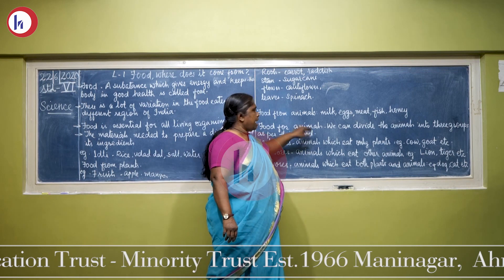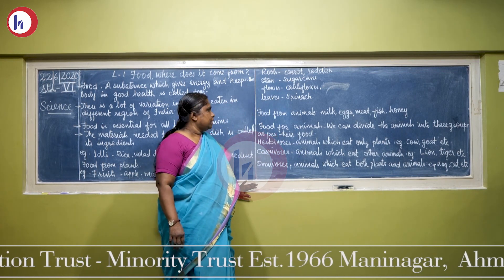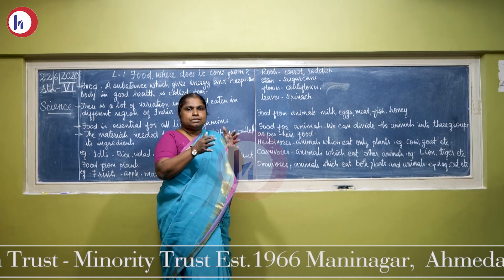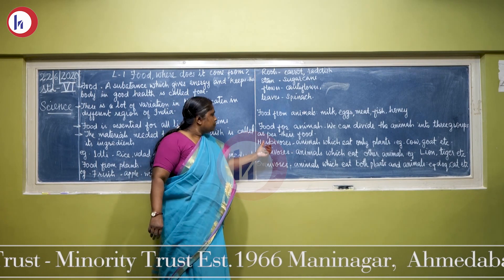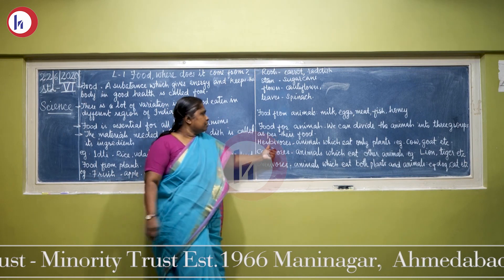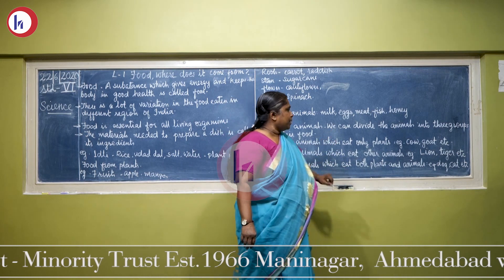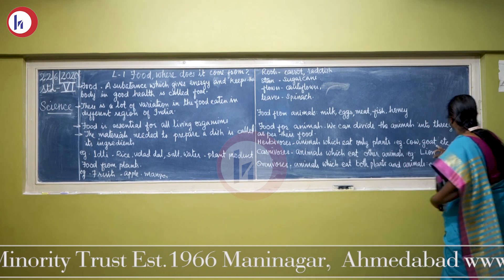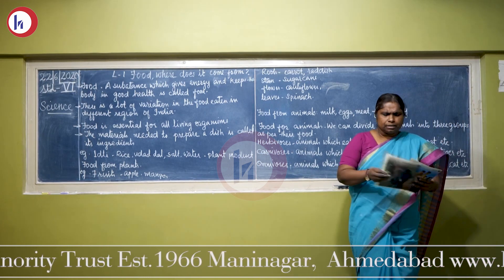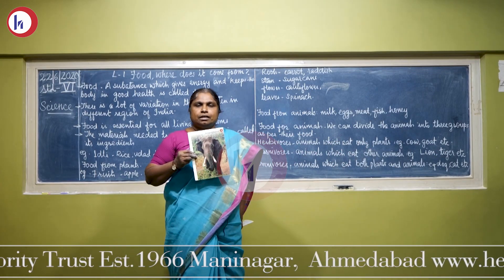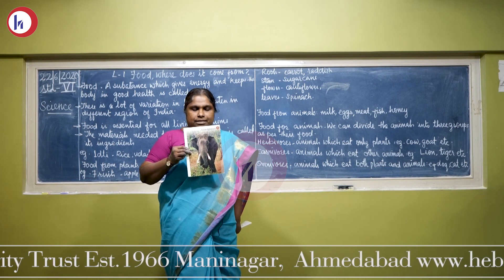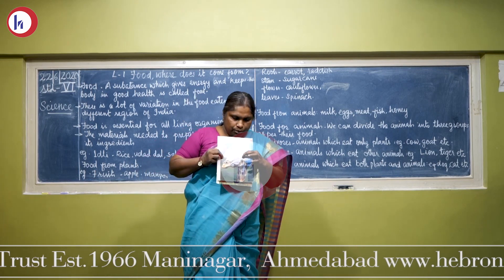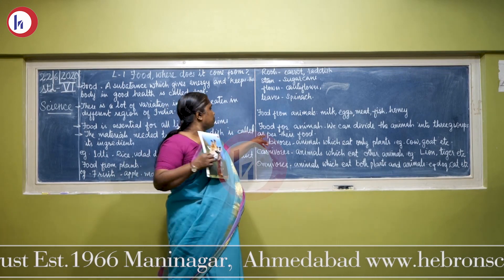Apart from human beings, animals also need food. We can divide animals into three groups as per their food. The first group is herbivores. Herbivore animals are animals which eat only plants and plant parts. Such animals are called herbivores. Examples: cow, goat, etc. Elephant eats only plants and plant parts — that's why it is called a herbivore. Giraffe also eats plants only, so it is also a herbivore animal.